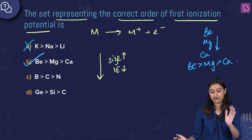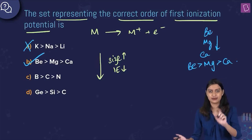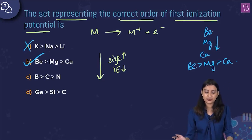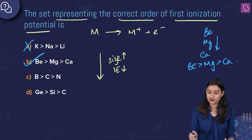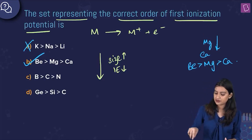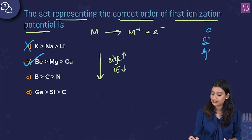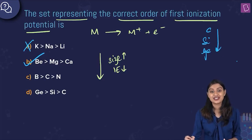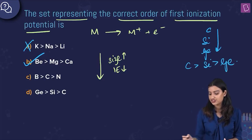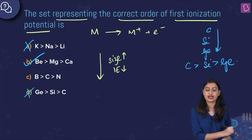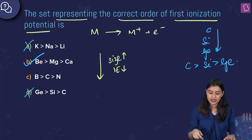Option C says B > C > N. Across a period from left to right, ionization energy generally increases. Option D says Ge > Si > C. These are group 14 elements — carbon, silicon, germanium. Going down the group, ionization energy decreases, so the correct order is C > Si > Ge. The order suggested is the exact opposite, so option D is incorrect.